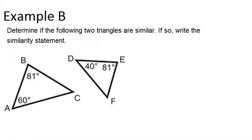Let's go to example B. Determine if the following two triangles are similar. If so, write the similarity statement. Same idea here. I can see already that we have one pair of angles that are congruent. So if we can show another pair of angles are congruent, we'll be all set. So far we know angle E is congruent to angle B.